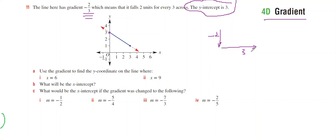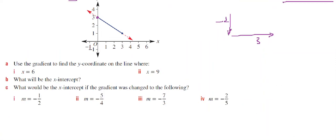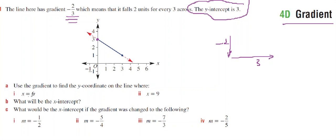Down 2 and a run of 3. Use the gradient to find the y-coordinate when x equals 6. So if I've gone across 3, I could go down another 2 and across 3, and I would be at x equals 6. And since I went down 2, the y-coordinate would be negative 1.